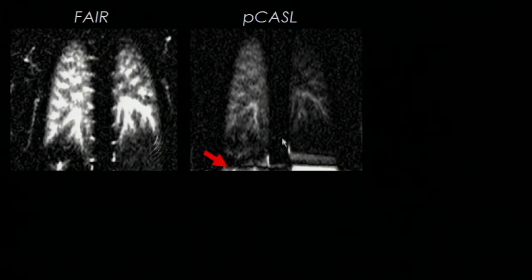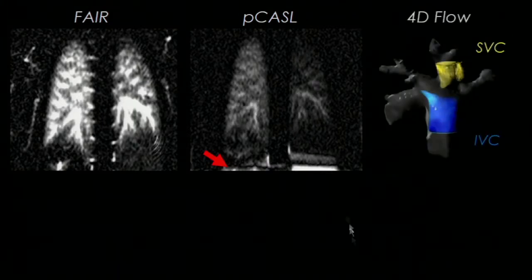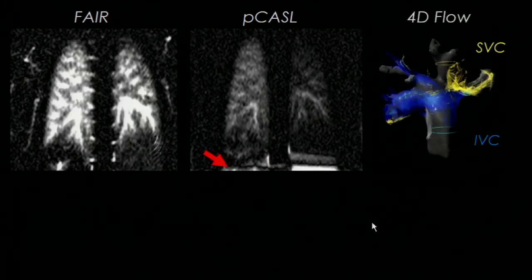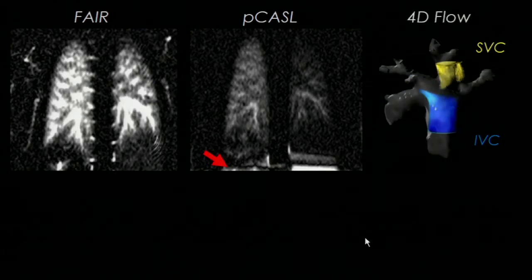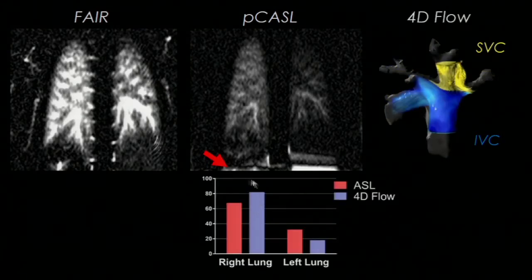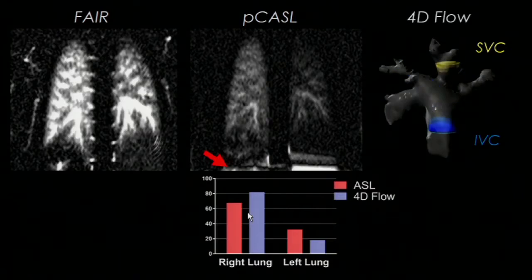In another case, the PCASTLE IVC contribution showed that the IVC flowed almost entirely to the right lung, with very little of that labeled blood arriving in the left lung. 4D flow also agrees, showing the blue IVC flow going mainly through the RPA. The quantification also shows that agreement about the differential flow towards the right lung.